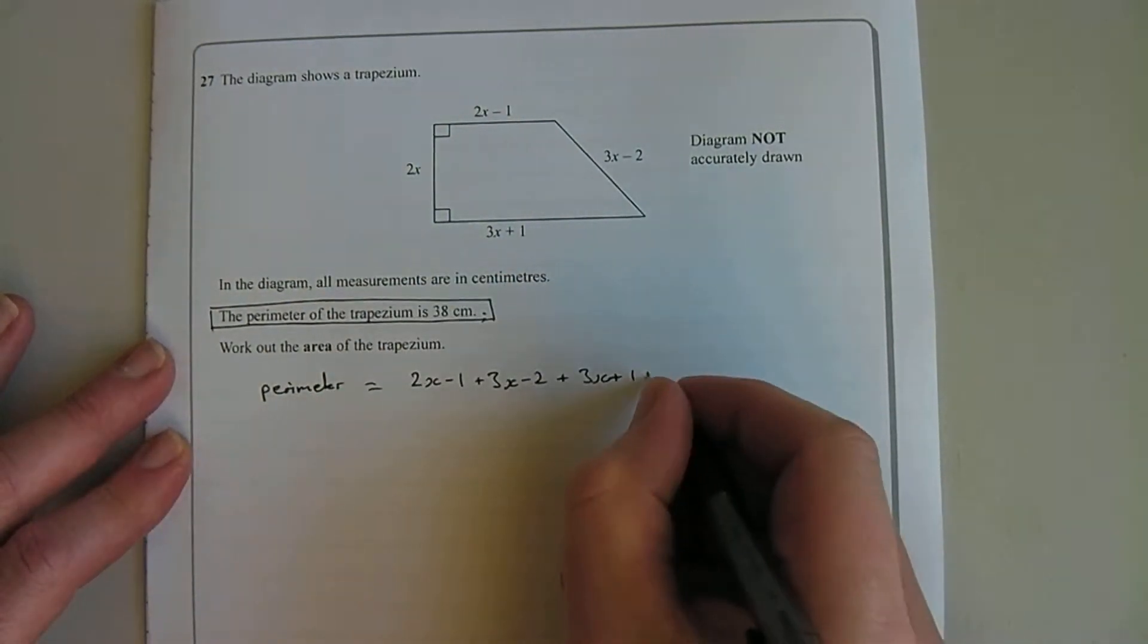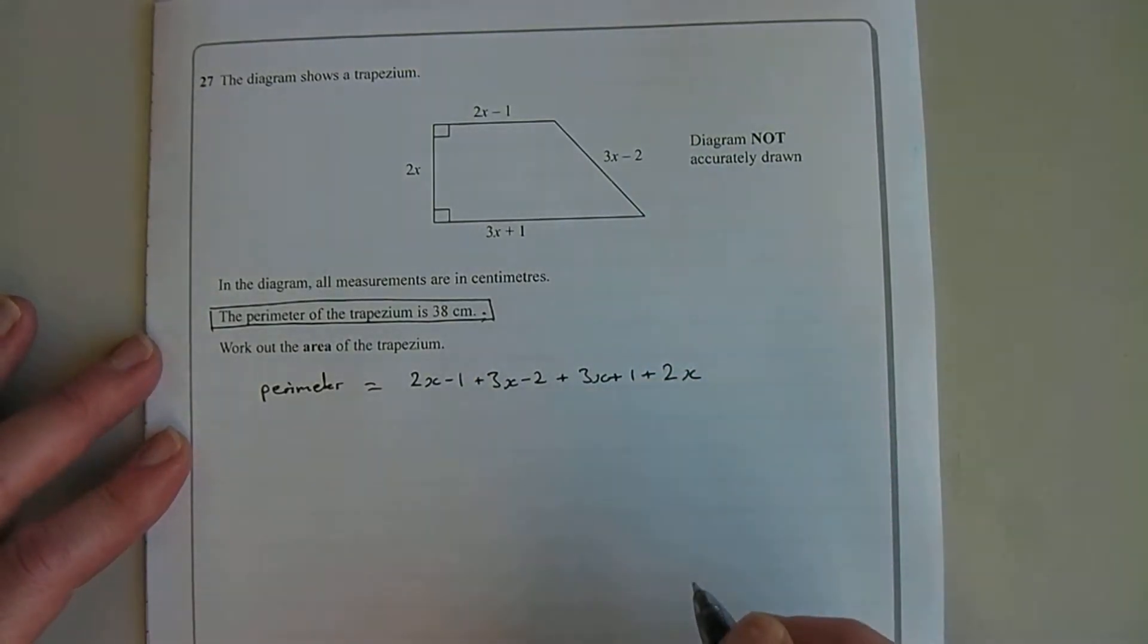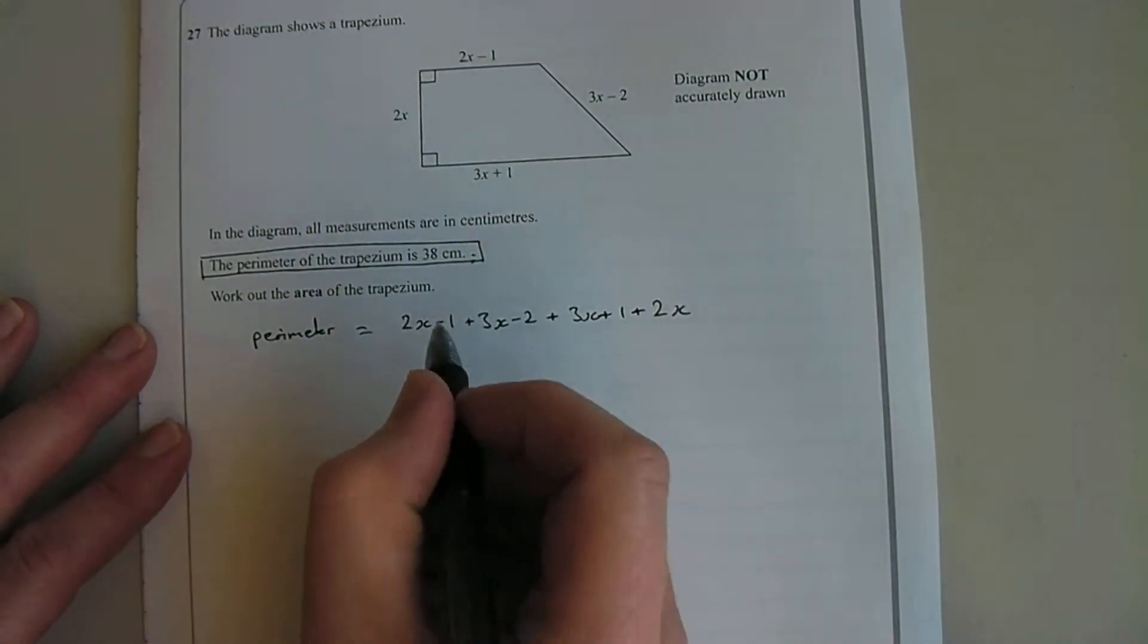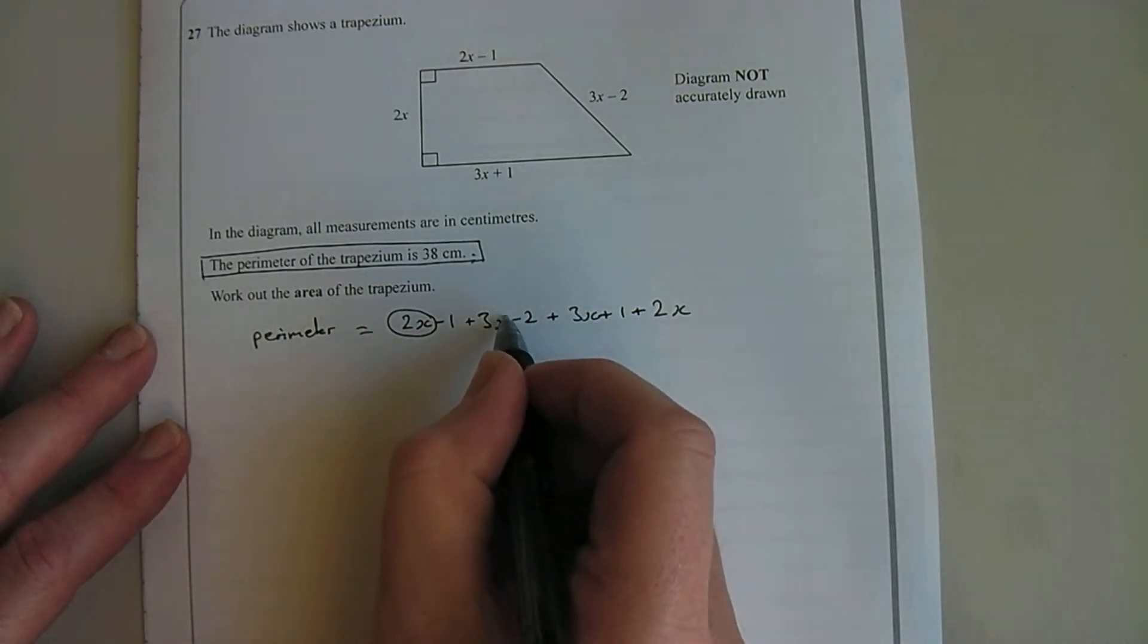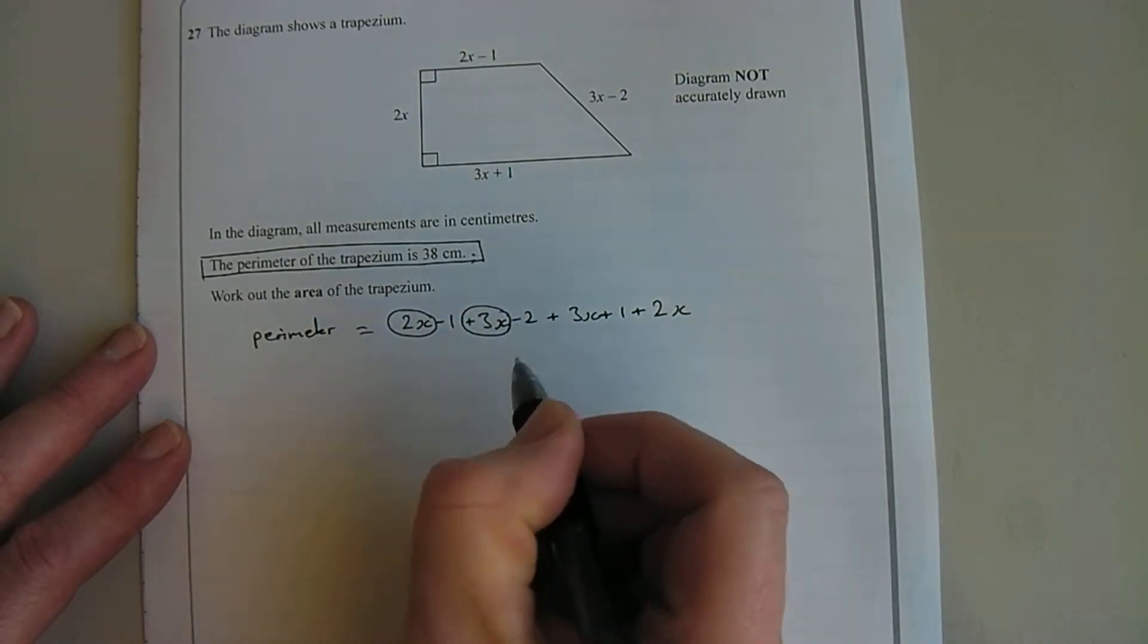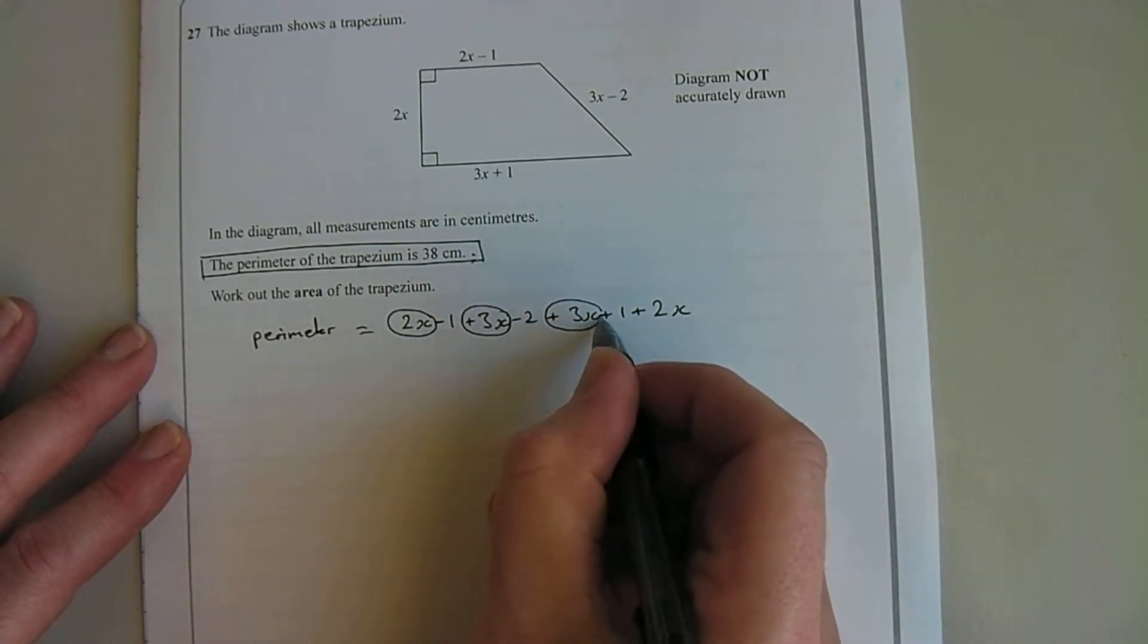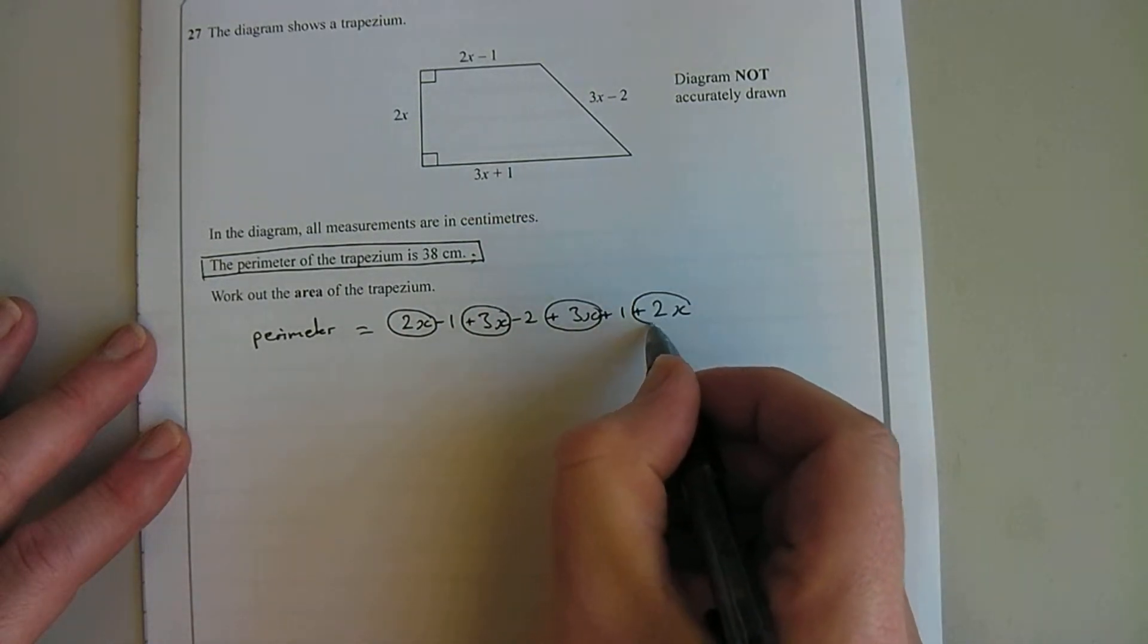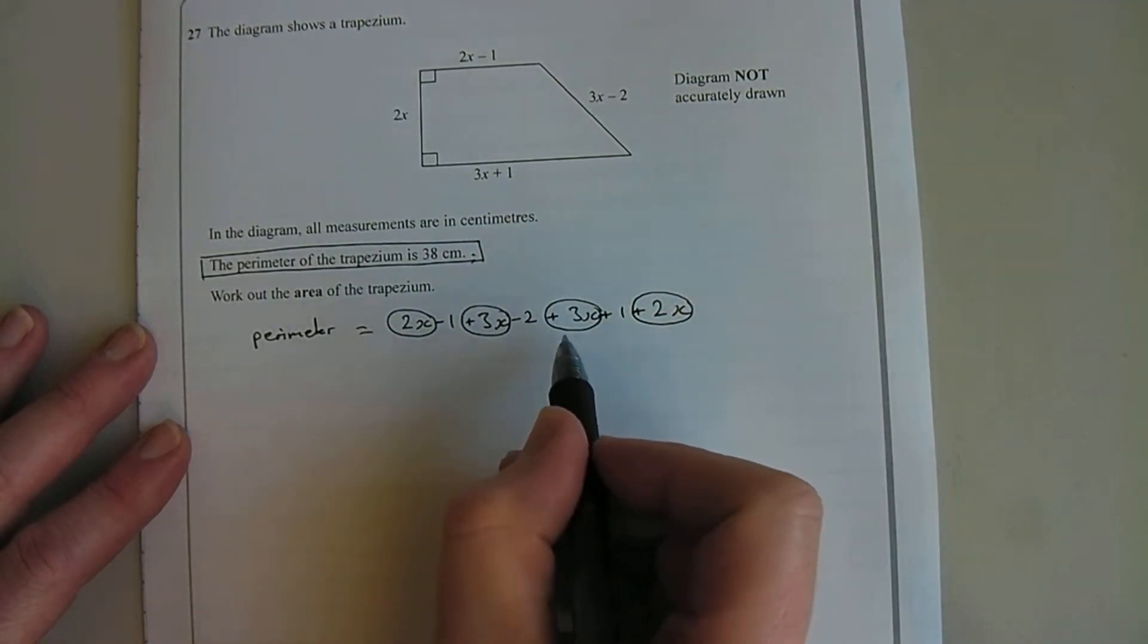So what we're going to do now is we're going to gather some like terms together. So I've got 2x add 3x add 3x add 2x, so 2x add 3x add 3x add 2x is 10x.